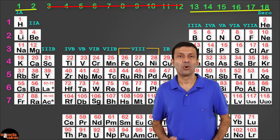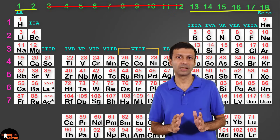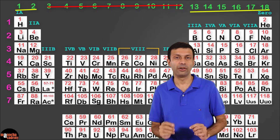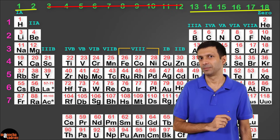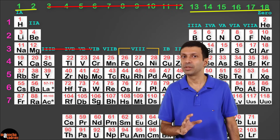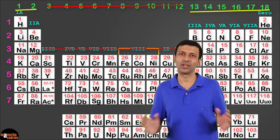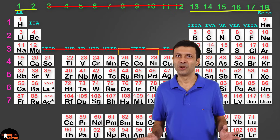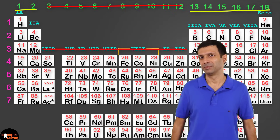So basically, only the A groups are in your syllabus and group 0, which is the noble gases. The B groups and group VIII are not in your syllabus. I hope that helps you remember the old scheme.